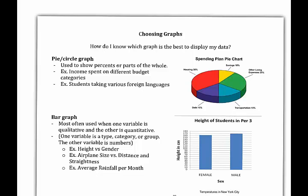In today's video, I want to talk about how to choose an appropriate graph. Let's first talk about circle graphs or pie charts. For a circle graph, you're going to be looking at things that show percents or parts of a whole. For example, in the example I'm showing here, we're looking at...